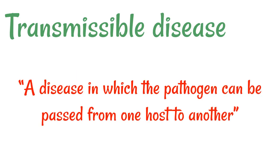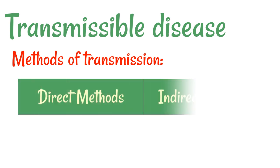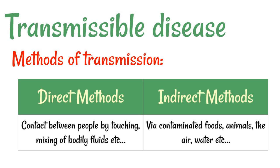A transmissible disease is a disease in which the pathogen can be passed from one host to another — that's just a fancy way of saying it can be spread. There are different ways it can be transmitted. It could be direct transmission, such as contact between people when they touch or mixing of bodily fluids. Then there are also indirect methods, such as via contaminated foods, via animals, airborne transmission, or spread through water.